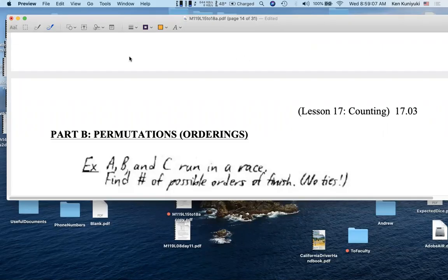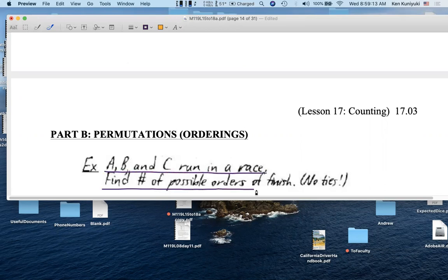Hi, everyone. It's the Olympics. Let's say that A, B, and C run in a race. Find the number of possible orders of finish, assuming no ties.